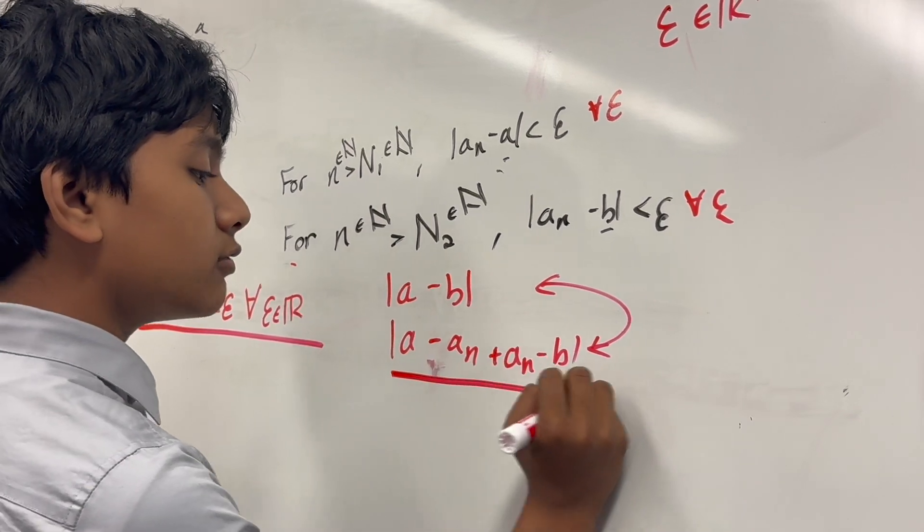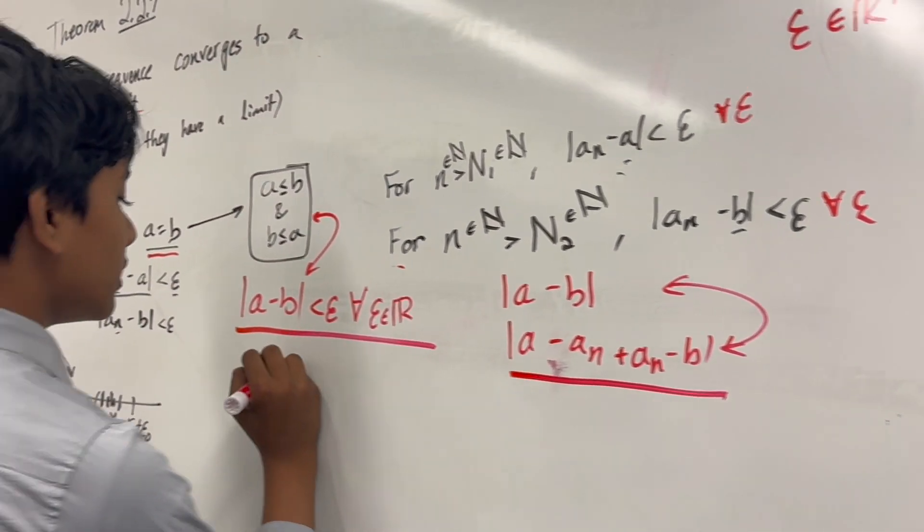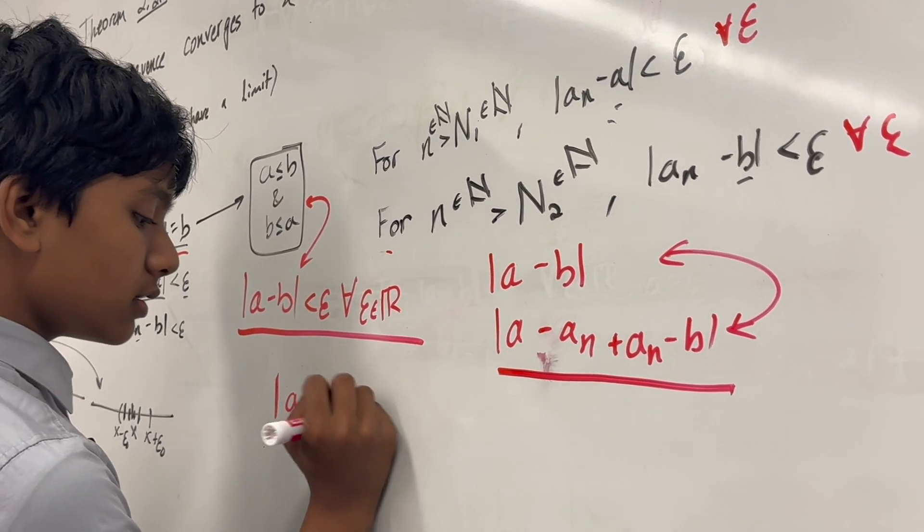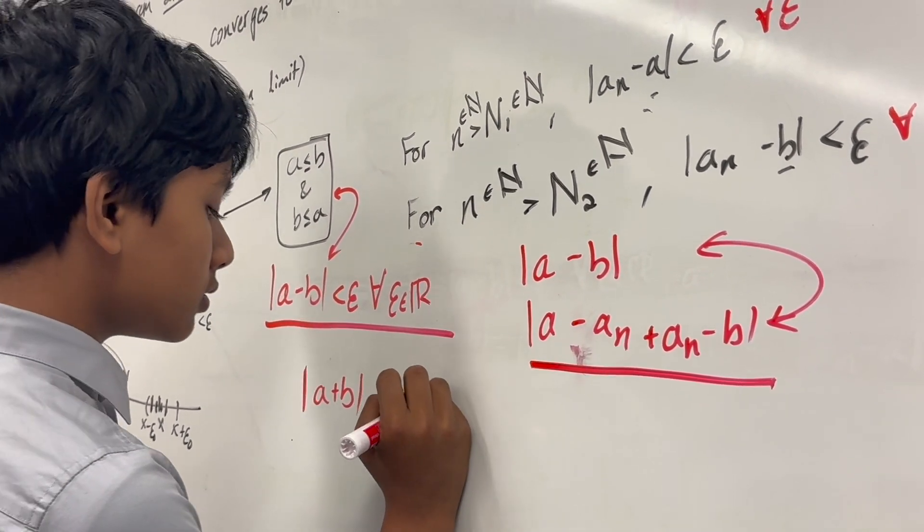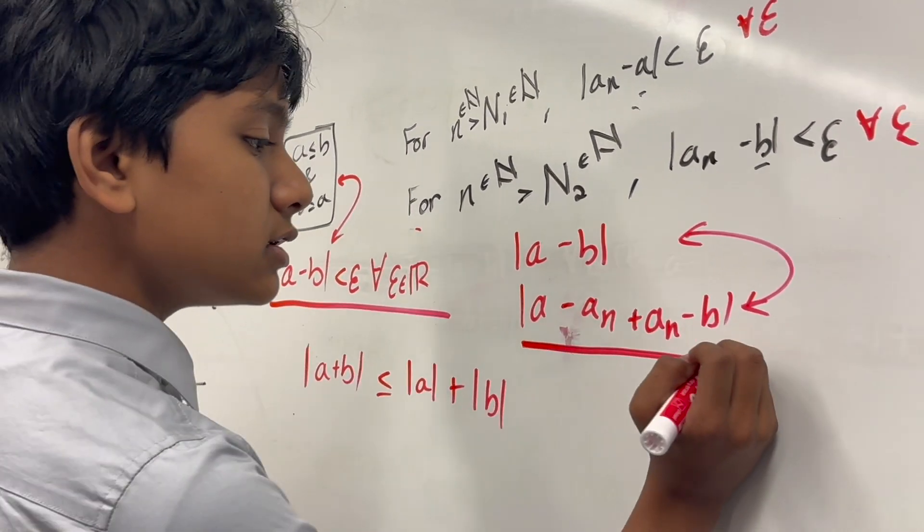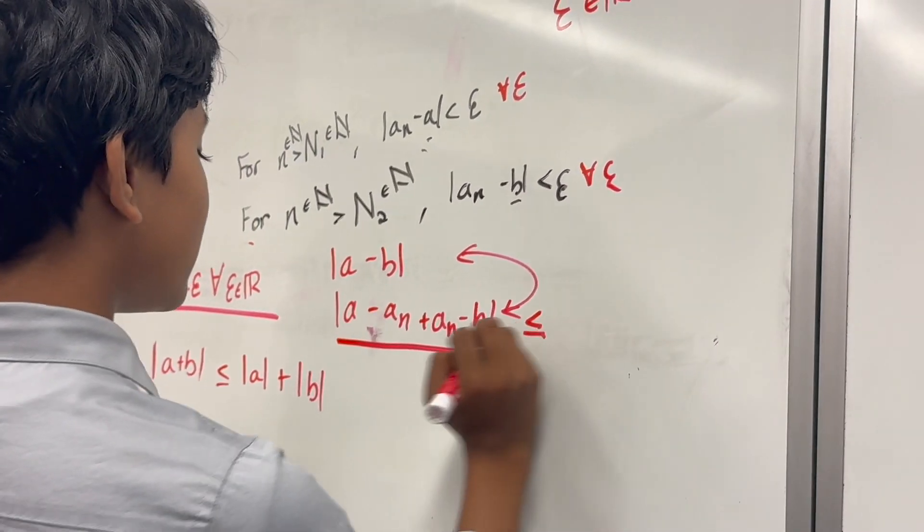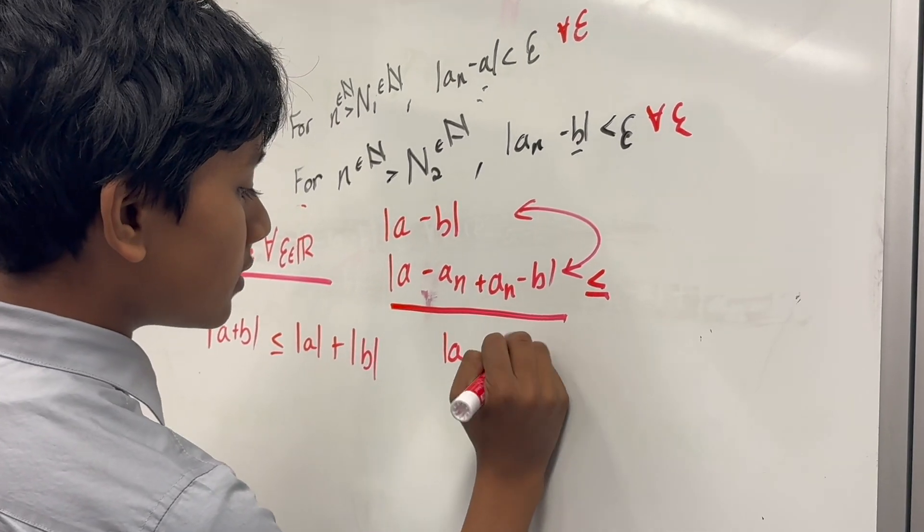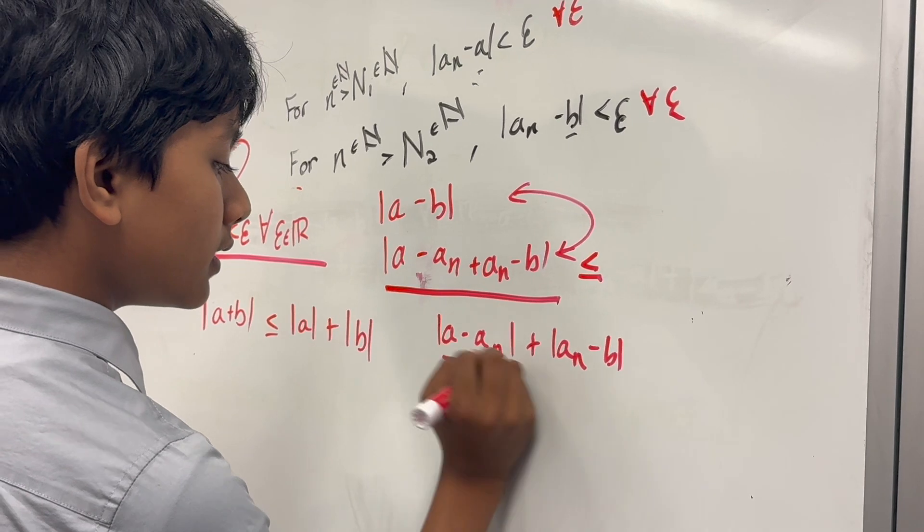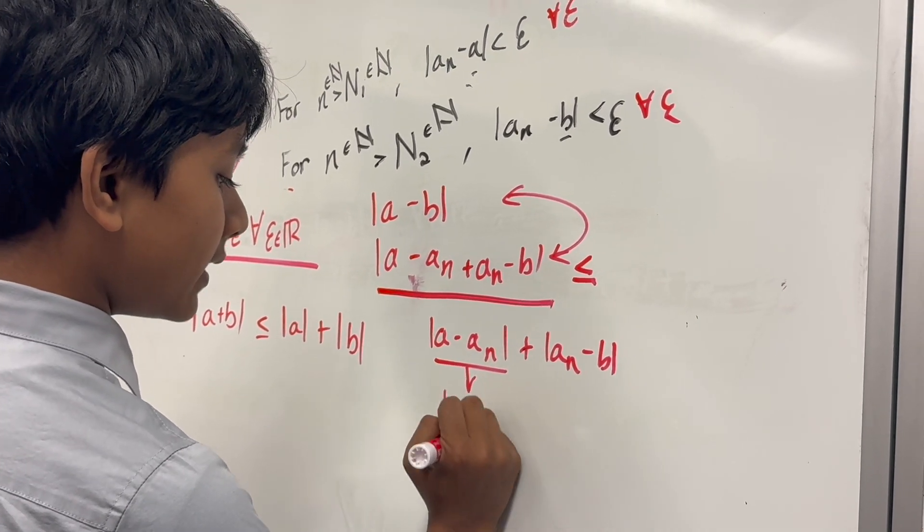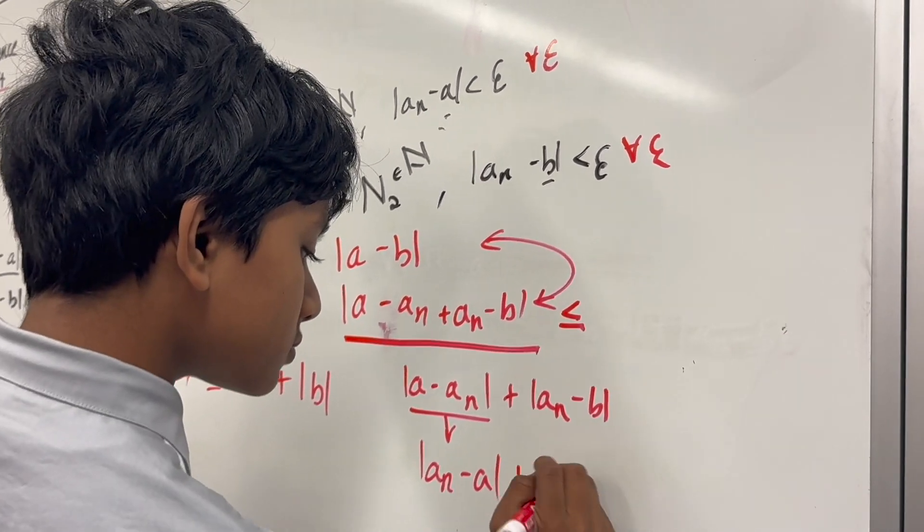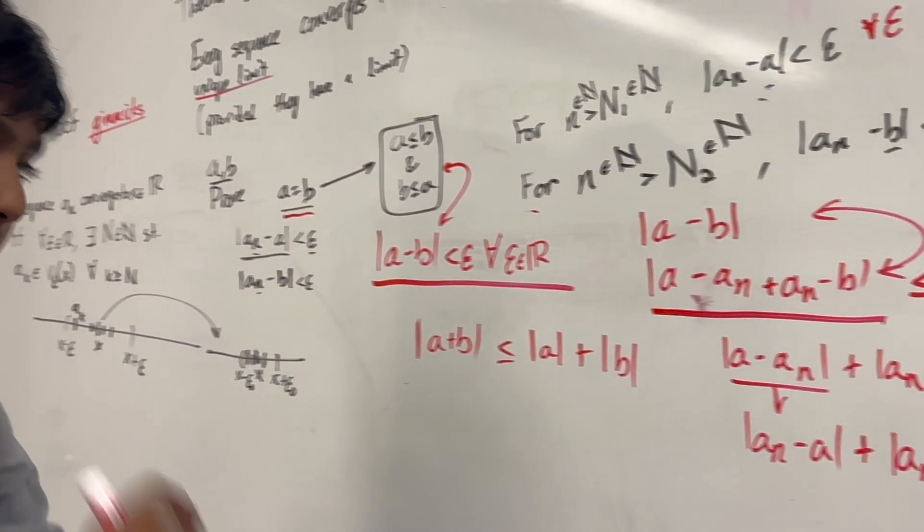So, now, by the triangle inequality, which we can prove very simply by just foiling it out, we know that A plus B, the absolute value of that, is always less than or equal to the absolute value of A plus the absolute value of B. So, by that logic, this is less than or equal to A minus A n, absolute valued, plus A n minus B, absolute valued. This, since we're taking the absolute value, we can just flip the sides around, right?